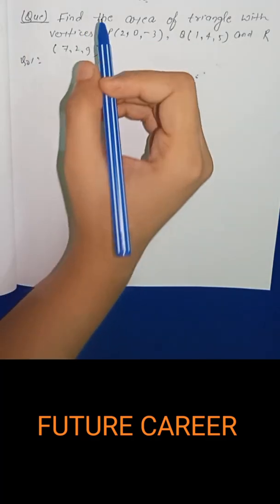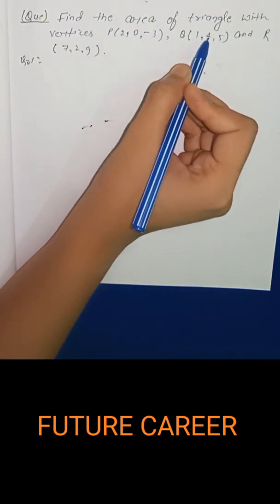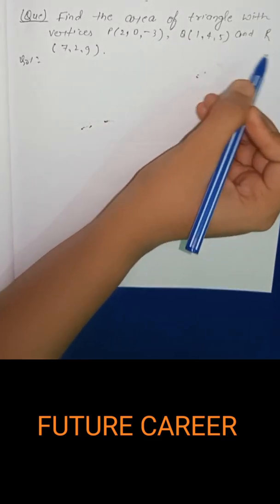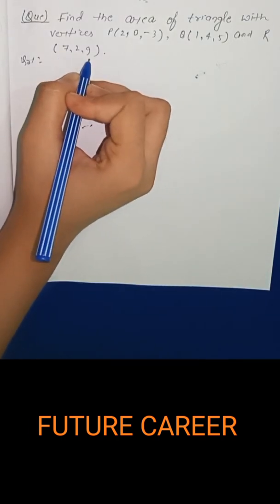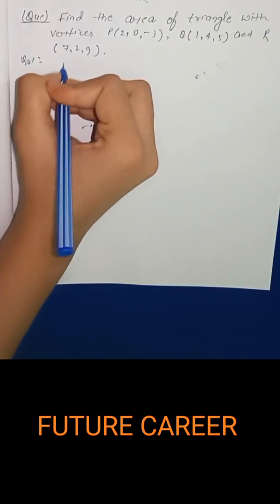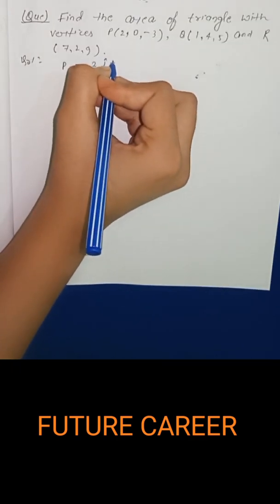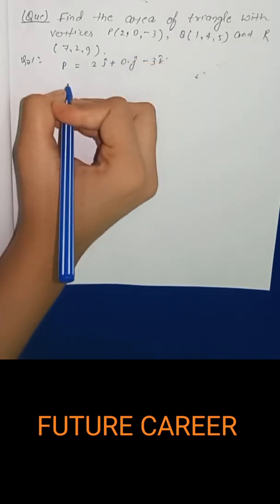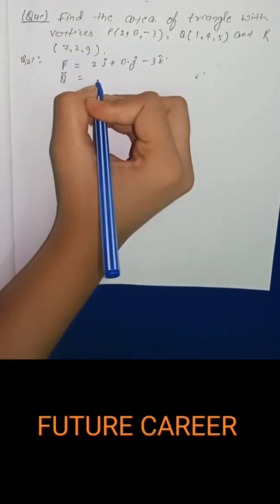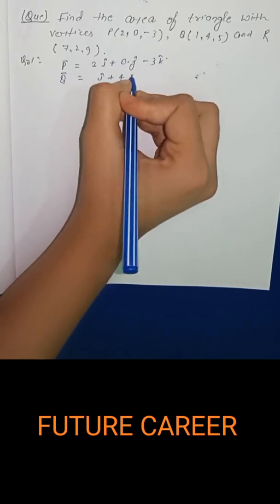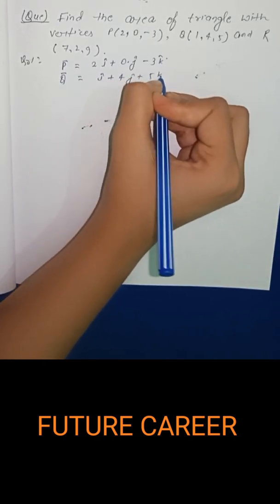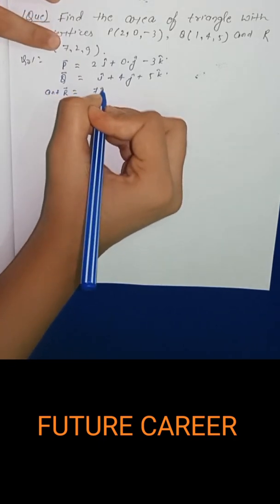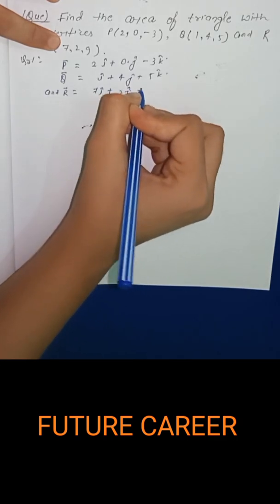Here we have the given question: find the area of triangle with vertices P(2,0,-3), Q(1,4,5), and R(7,2,9). We can write P as 2i cap plus 0 into j cap minus 3k cap, Q is i cap plus 4j cap plus 5k cap, and R is 7i cap plus 2j cap plus 9k cap.